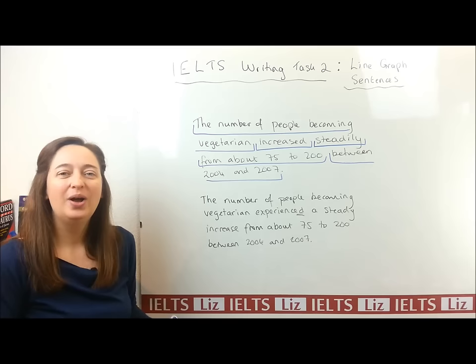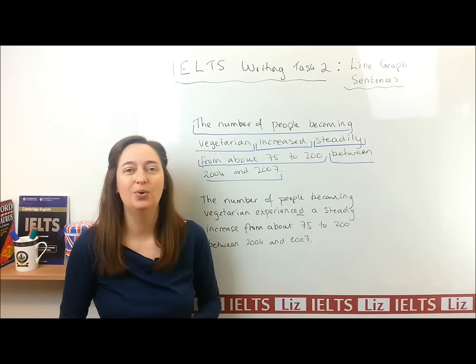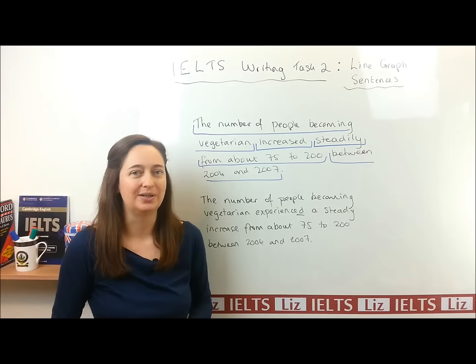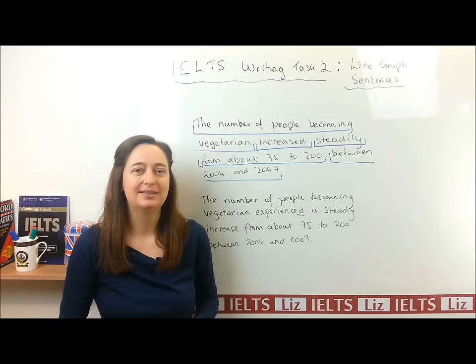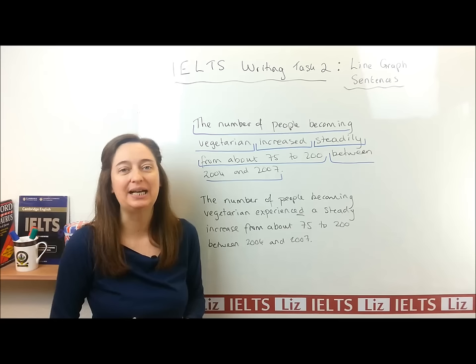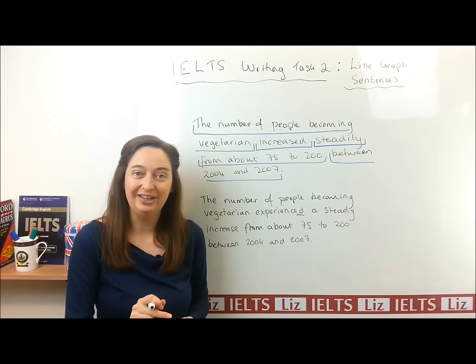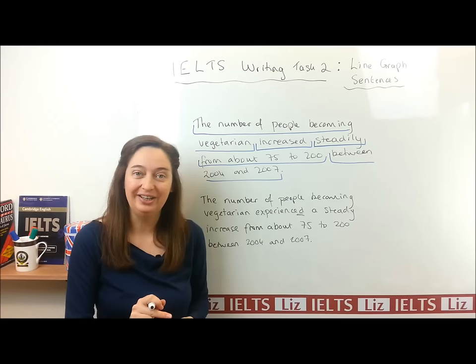Those are the four main complex sentences that you can use when you write your line graph report for IELTS Writing Task 1. There are other sentences we can use, but those are the four main ones that you need to practice and perfect, which means write without too many mistakes. Remember, the more mistakes you make, the lower your band score will be. So please practice writing those sentence structures. That's all for this lesson — I hope that was useful for you. Please remember to press like or share it with your friends. I'll see you again in another IELTS lesson.